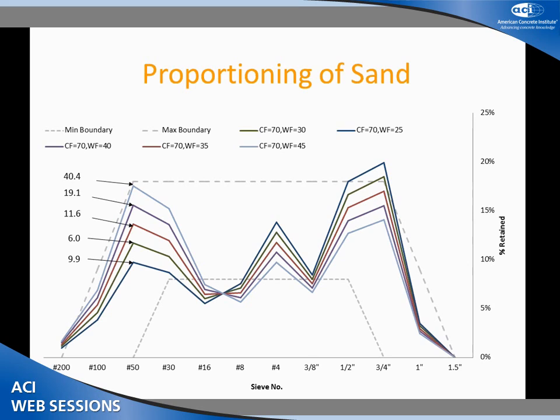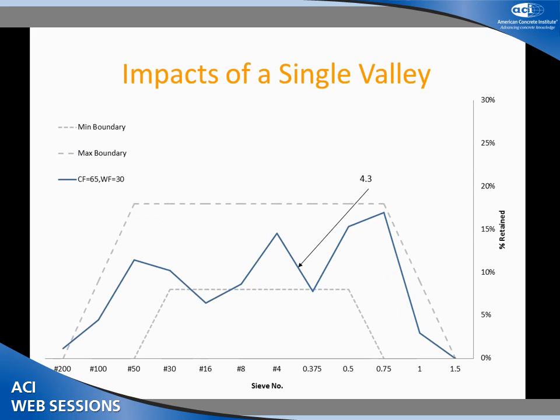We can do the same thing with sands — going from high down to low. Holding the intermediate and coarse in the same ratio, we can see a minimum — there's a boundary here. We've done this with four different aggregates and over 350 concrete mixtures, and we've learned some really cool things.